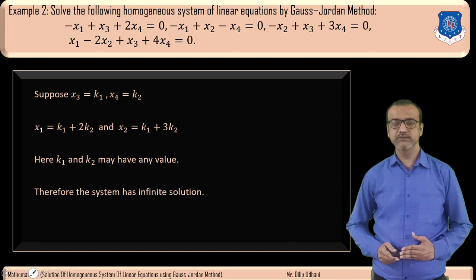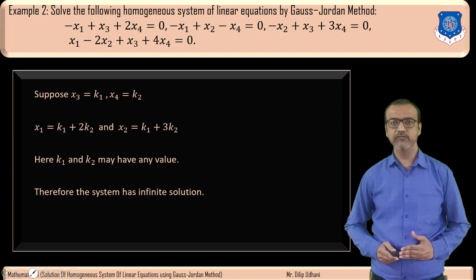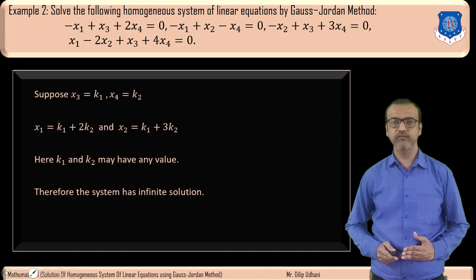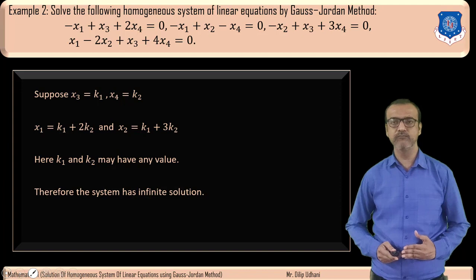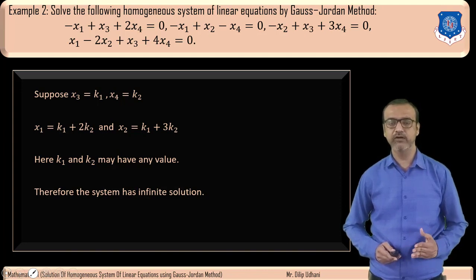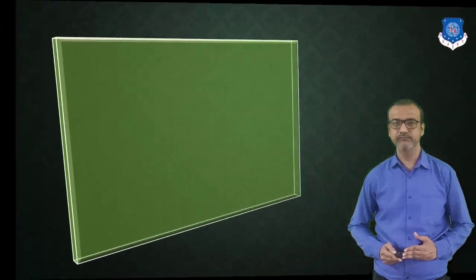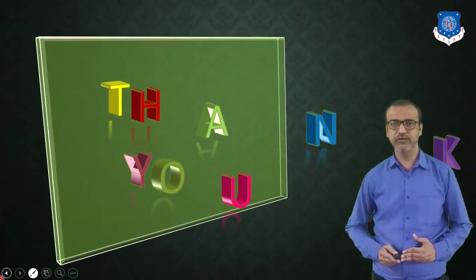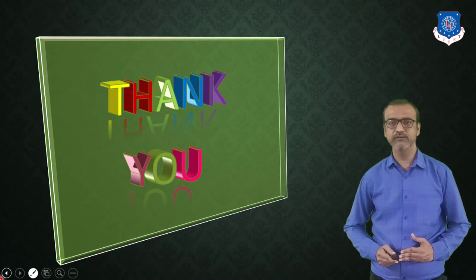In today's lecture we discussed what is a homogeneous system of linear equations and the steps to find its solution using Gauss-Jordan method. We saw two examples: in example 1 we got a trivial solution, and in example 2 we got an infinite solution. Thank you for watching this video. I will see you in the next lecture.